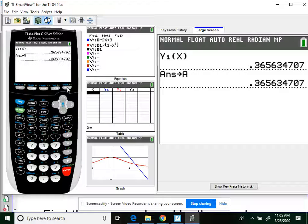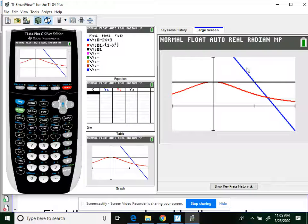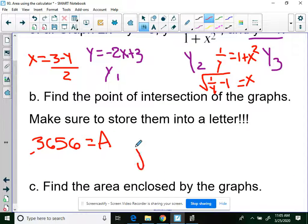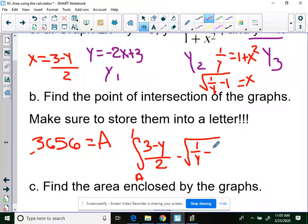So I need to do y1 of x. There's my y value. I'm going to store that into A. Then look at your function. Which one's going to be on the right? So our line is on the right. Our weird curve is on the left. So it's going to be line minus curve. So we have to set this up. From A to 1, 3 minus y all over 2, minus the square root 1 over y minus 1 dy. Let's see what that equals.